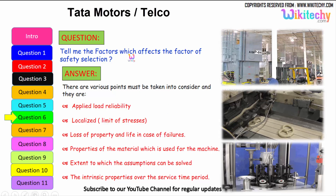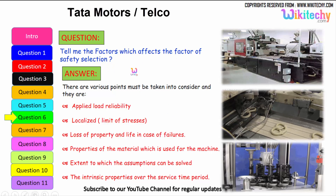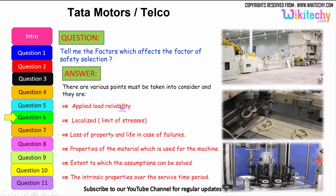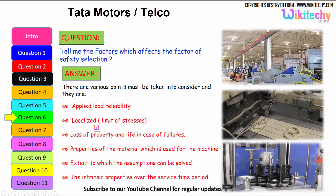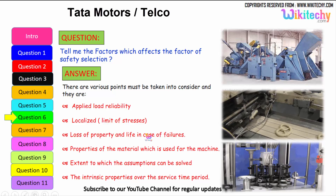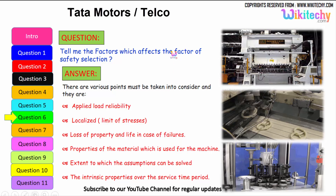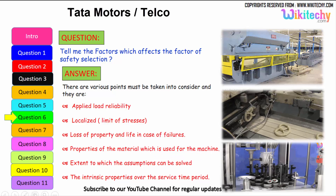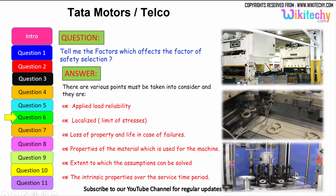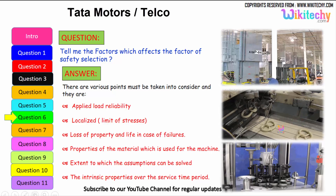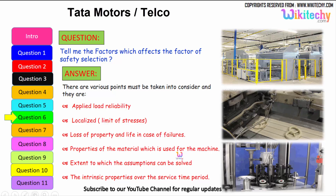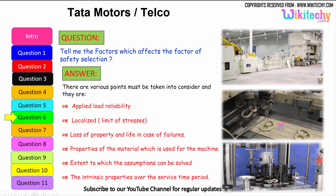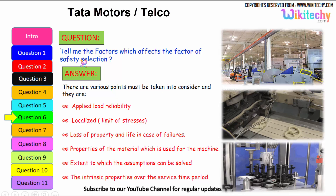Let us see the factors which affect the factor of safety selection. These include: applied load reliability; limit of stresses thus localized; loss of property and life in case of failures — a very important factor; properties of the material used for the machine; the extent to which assumptions can be solved — whether it extends, compresses, or otherwise; and the intrinsic property over the service time period, i.e., how well it will sustain.